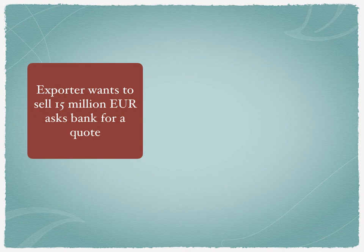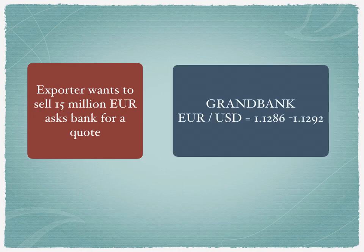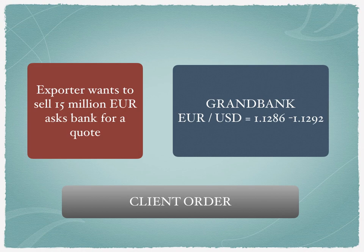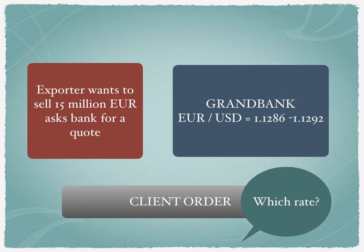Let's take an example of how a client order is executed. An exporter approaches Grand Bank with a sell of 15 million euros and asks the bank for a quote. The exporter is the market taker — accepting the price — while Grand Bank is the market maker. Grand Bank gives a quotation of 1.1286 / 1.1292. The question is: which rate is applicable for the exporter? Will it be 1.1286 or 1.1292? The exporter wants to sell euros.